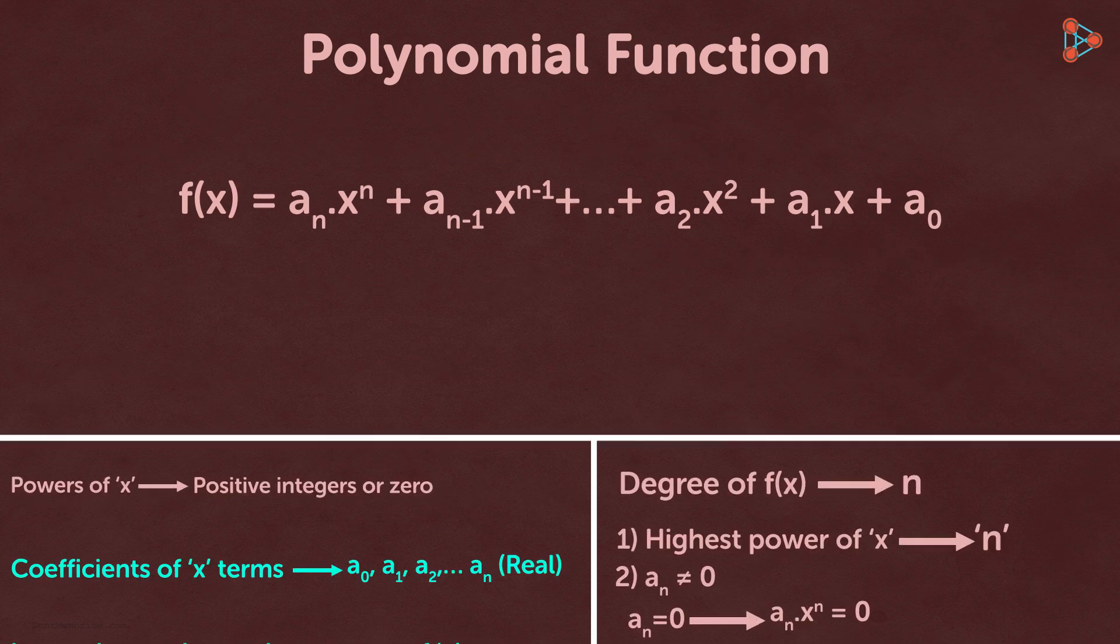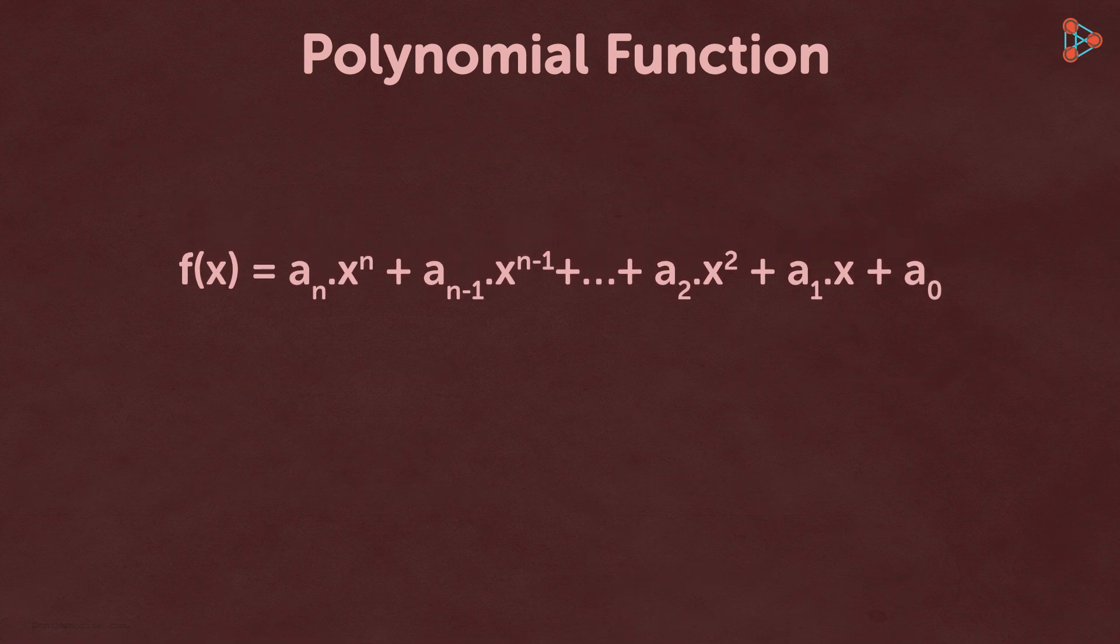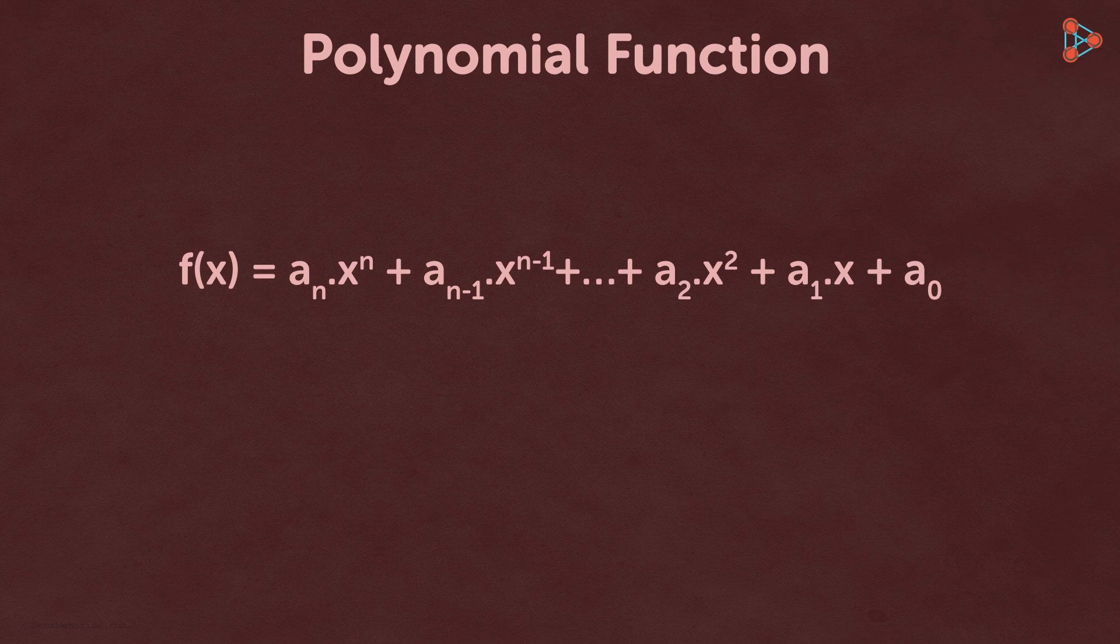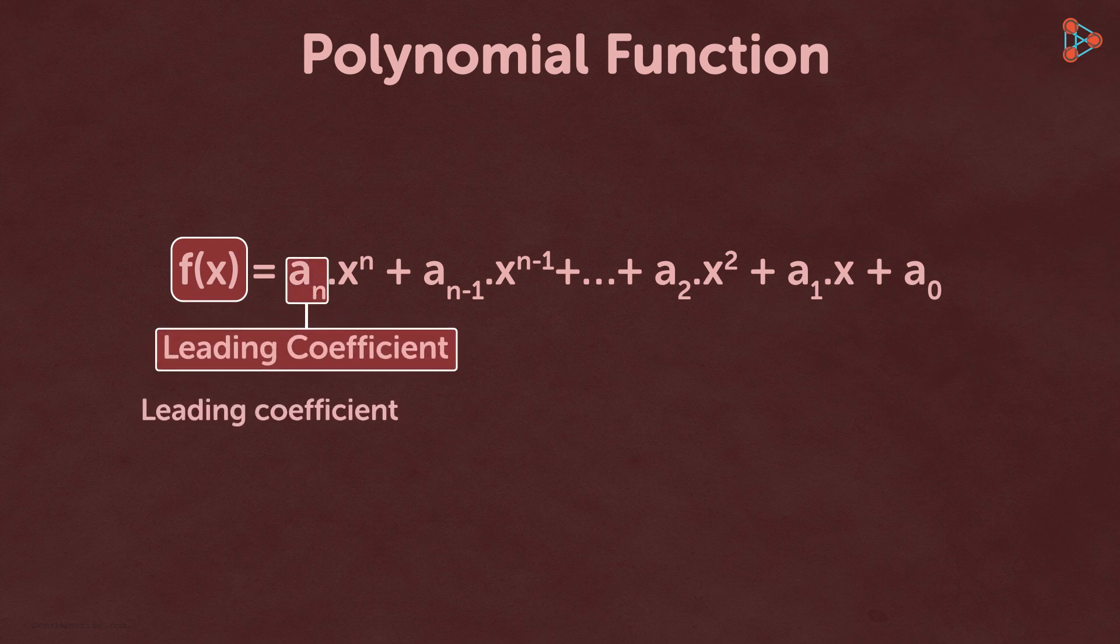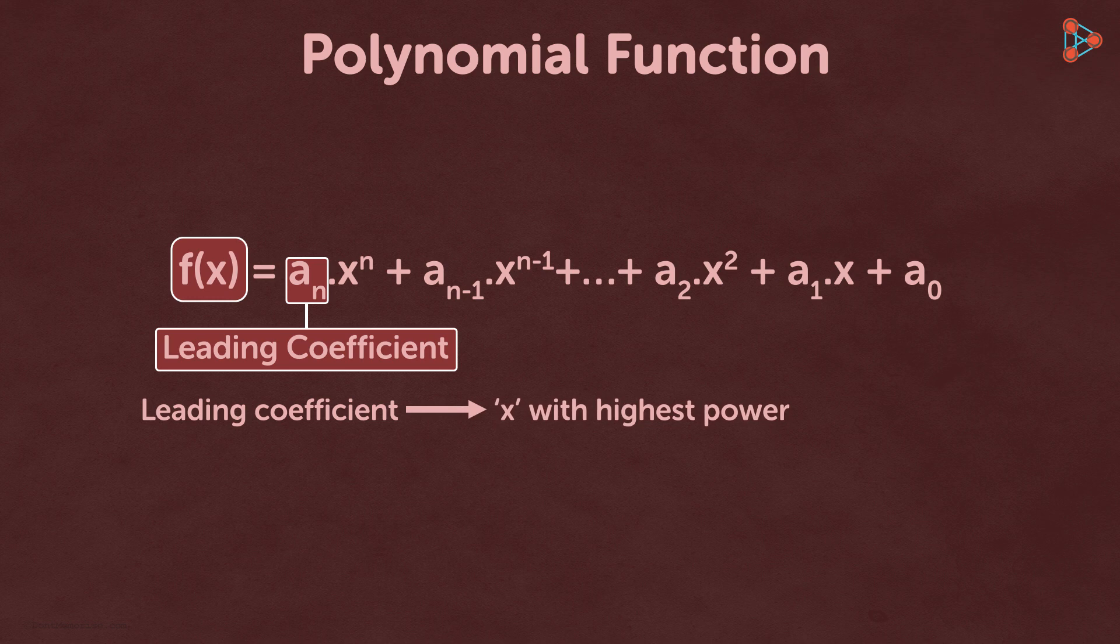Now we look closely at the terms to understand the anatomy of our polynomial function. Here is our polynomial function f. a_n is the leading coefficient. This is because it is the coefficient of the x term with the highest power n.